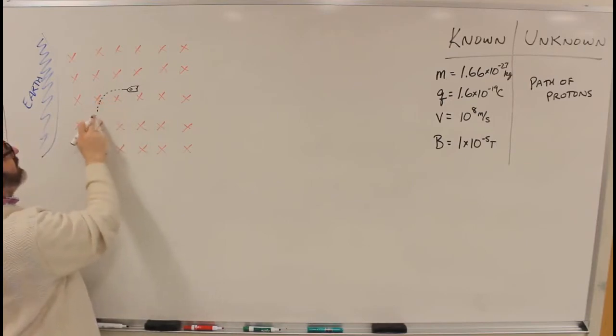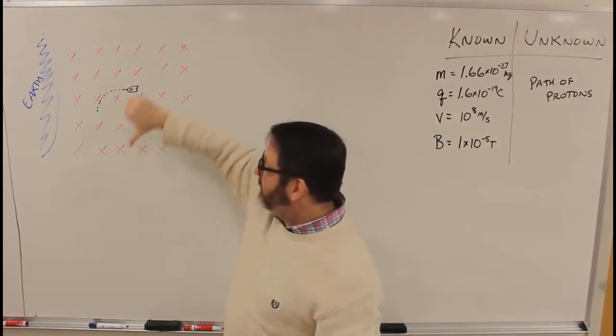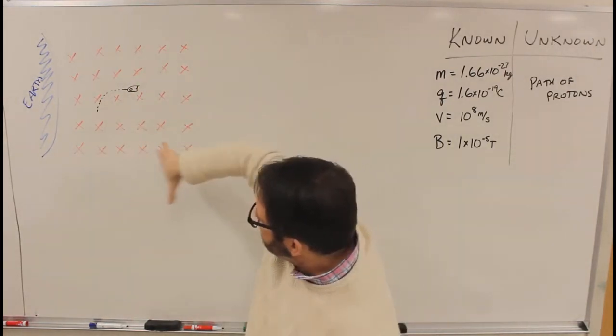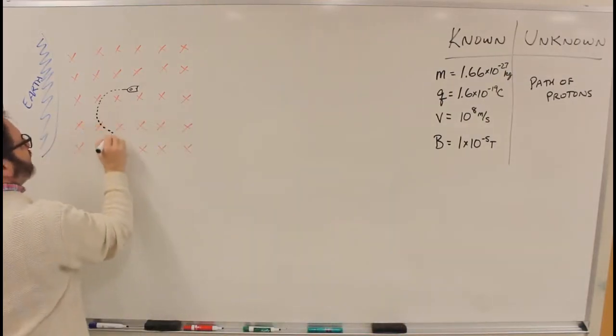Now, once they curve downward, if I look at it here, now V—my thumb—is pointing down. Magnetic field is still into the page. So now the force is to the right. So they're going to curve around like this.